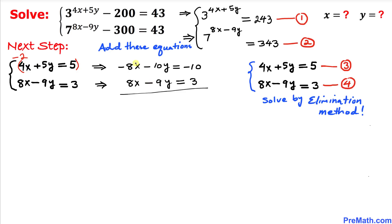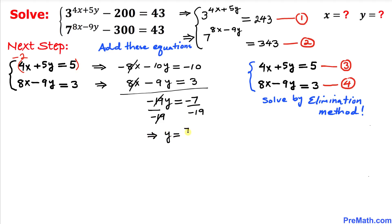We keep equation 4 as 8x minus 9y equals 3. Now let's add the two equations. The negative 8x and positive 8x cancel. Adding the remaining terms gives us negative 19y equals negative 7. Dividing both sides by negative 19, our y value turns out to be 7 divided by 19.